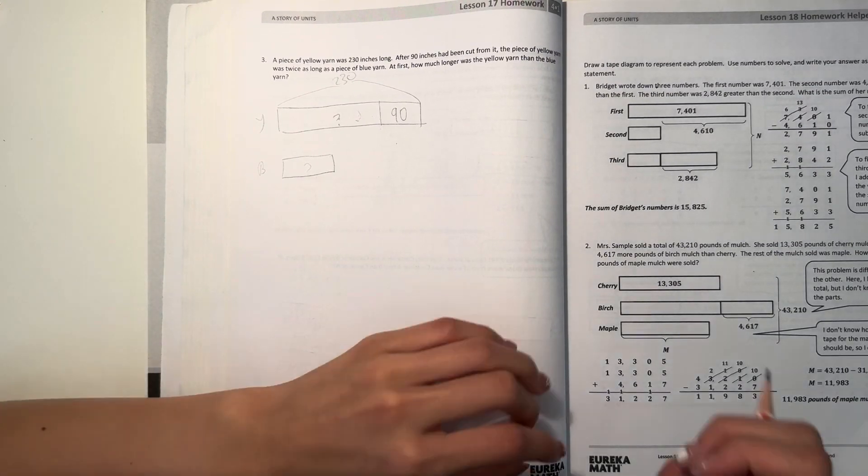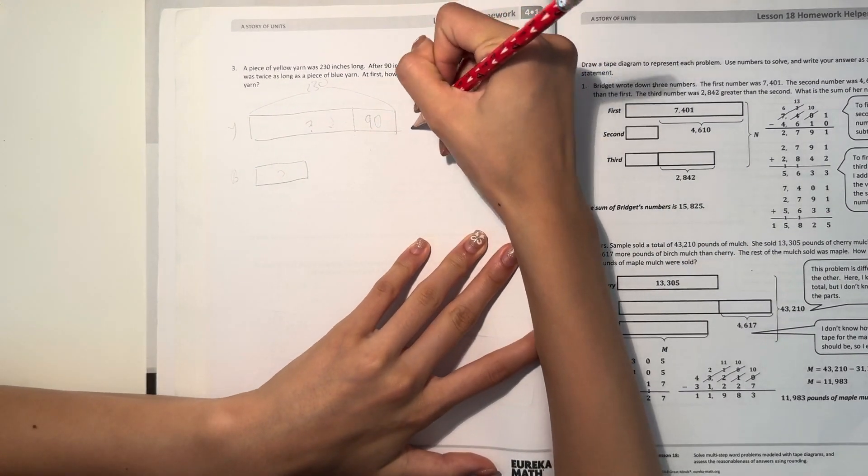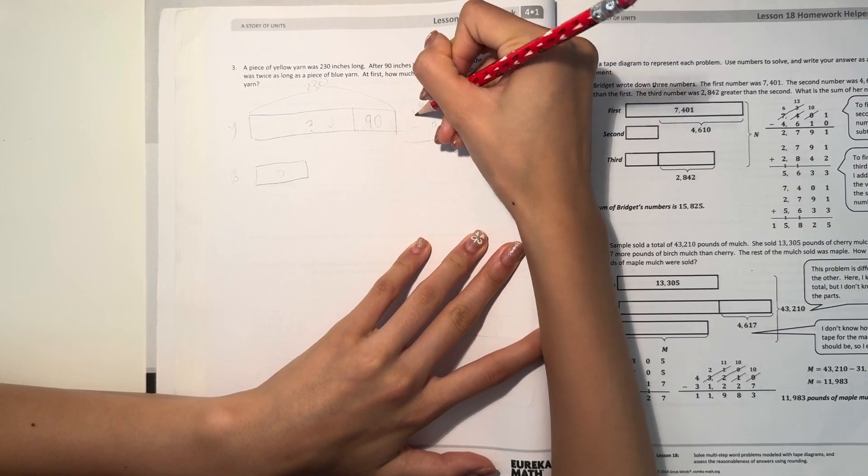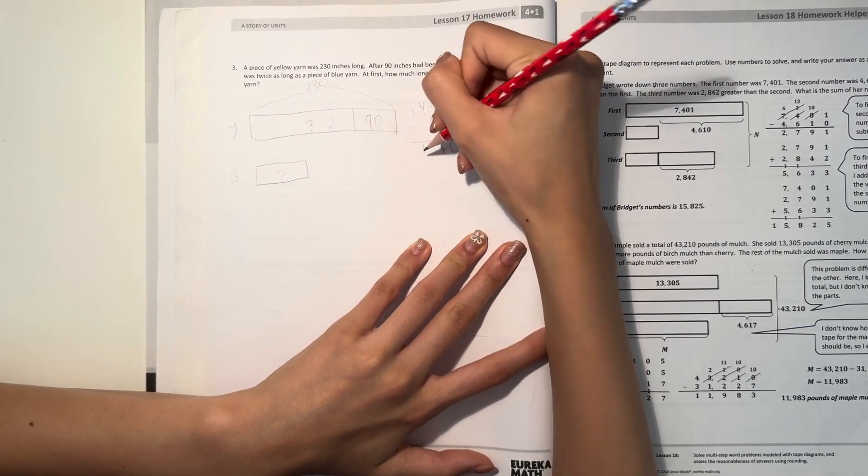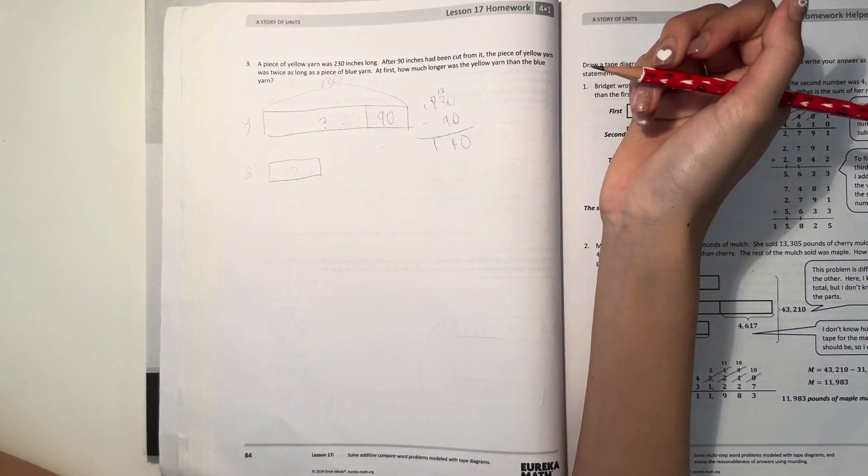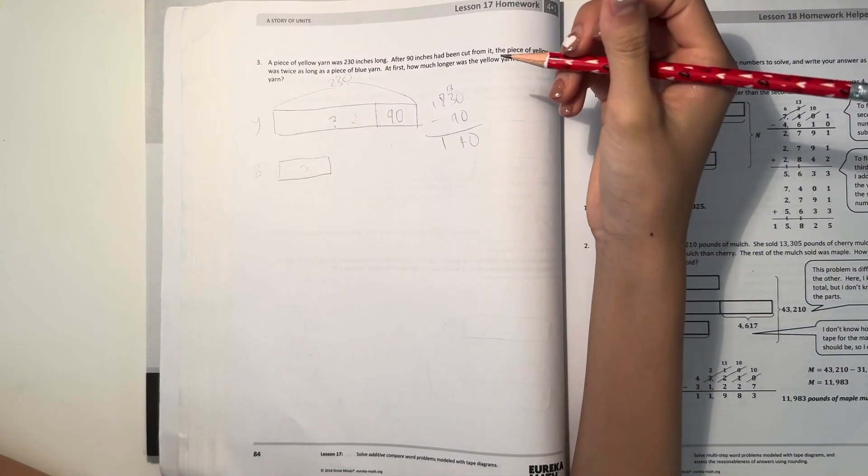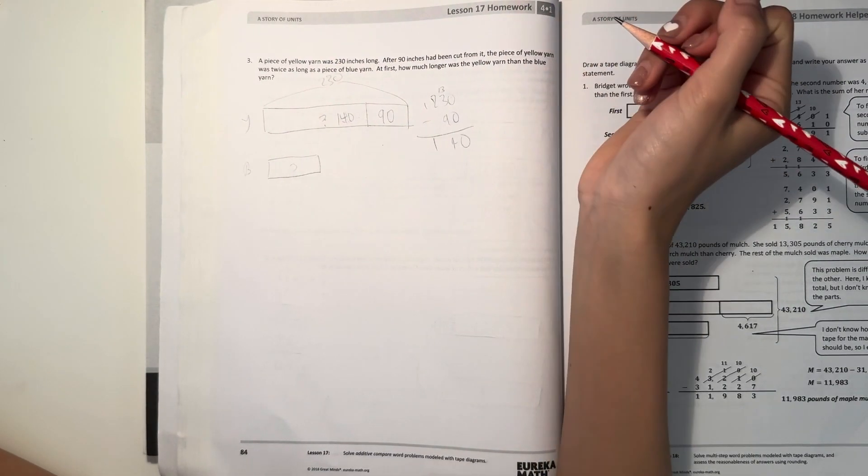So first we have to find out how long is the yellow yarn now. So 230 minus 90. 3, 0, 4, 1. So that would be 140. So right now the yellow yarn is 140 inches long.